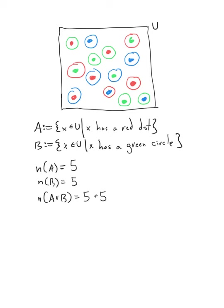So counting the elements with a red dot or a green circle: one, two, three, four, five, six, seven, eight. And that is all of them.